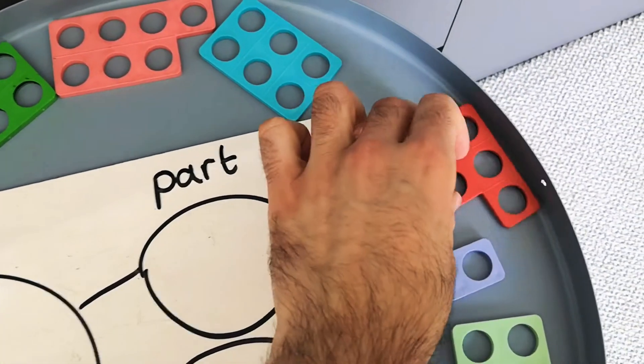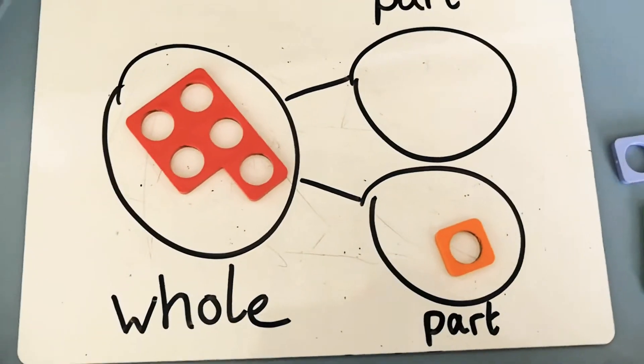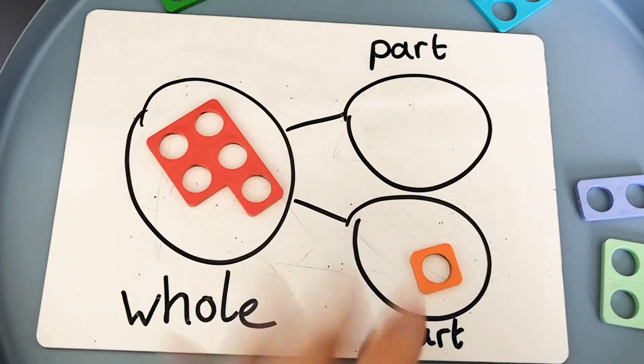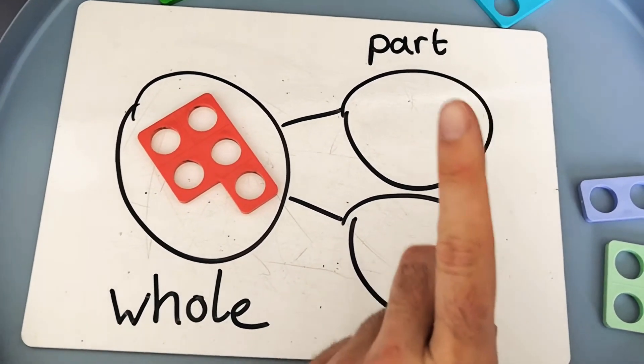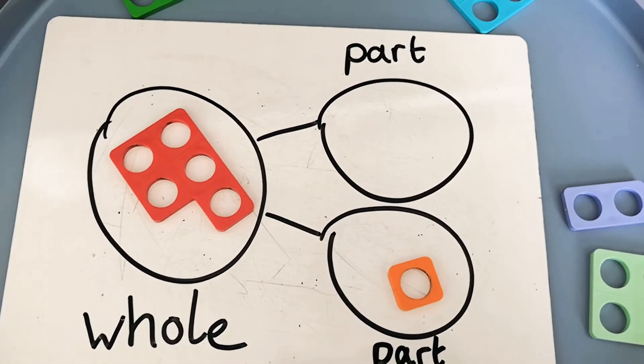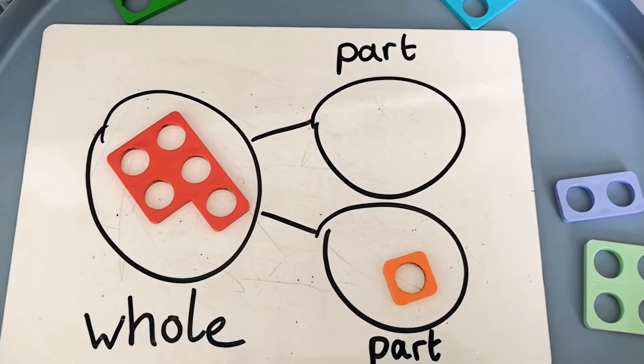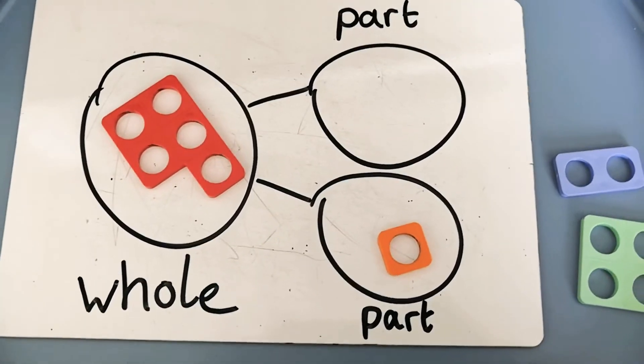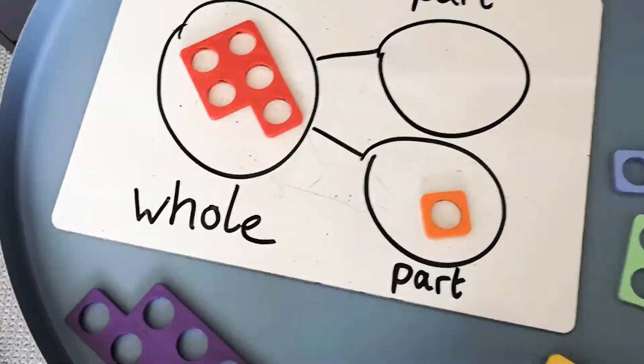You can also do more complicated ones. For example, if my whole is 5 and one of my parts is 1, what is my other part? And this is in preparation for doing missing number problems later on in school.